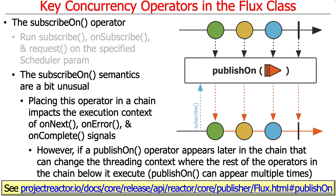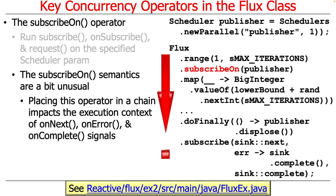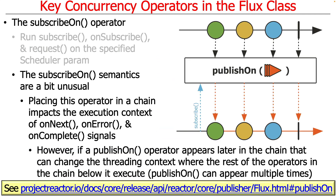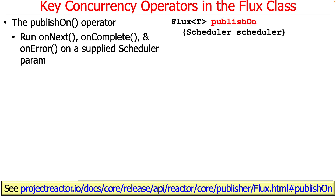To make things even more complicated, if a publishOn operator appears later in the chain — say before doFinally or something like that — then that will once again change the thread context where the rest of the operators below publishOn will execute. And publishOn can appear multiple times, so this quickly starts to get very convoluted. This convolution started with RxJava's subscribeOn operator, which works the same way that subscribeOn works in Flux.